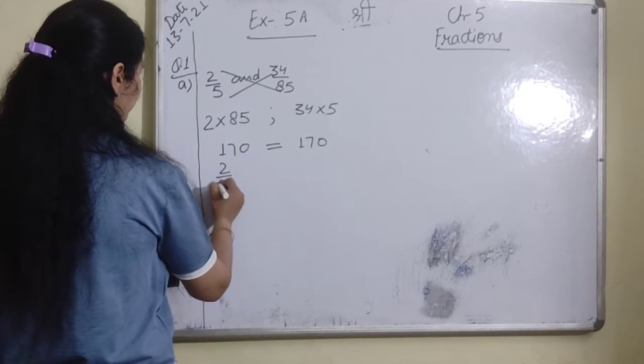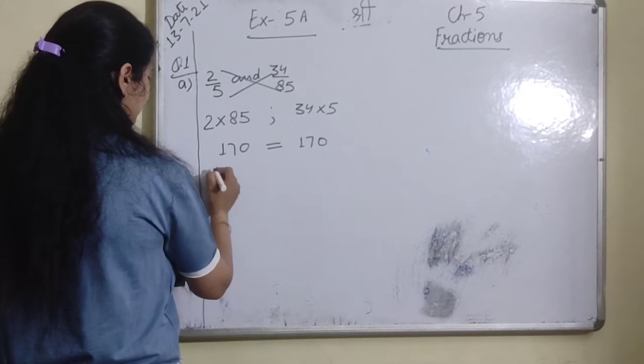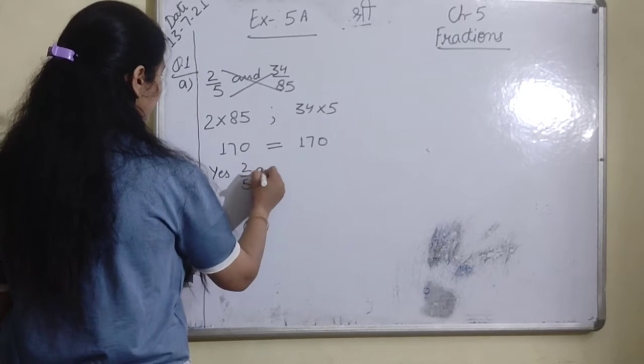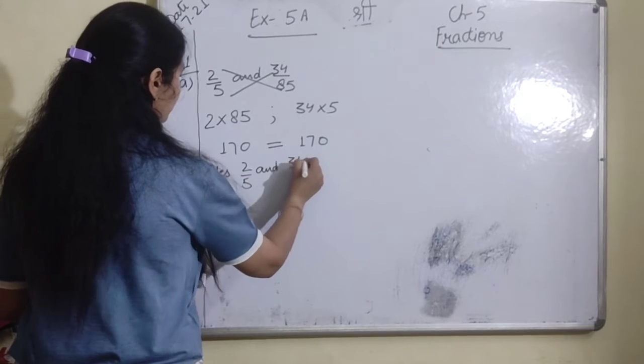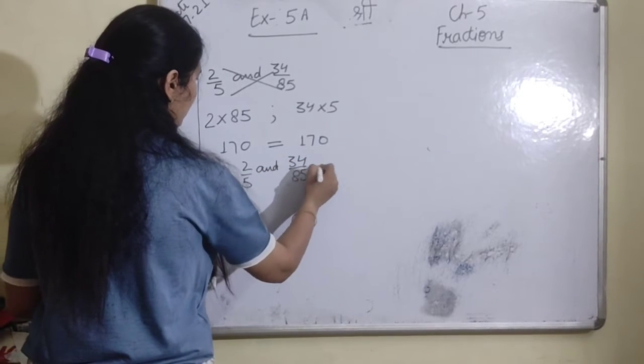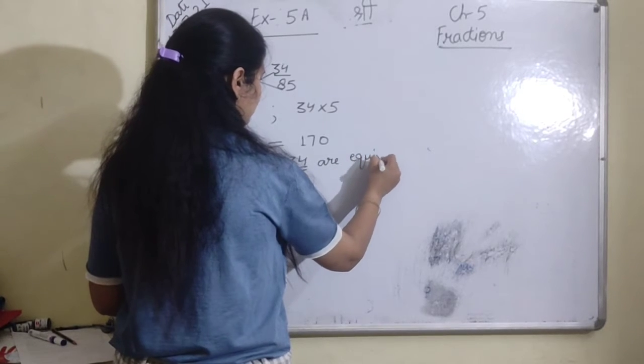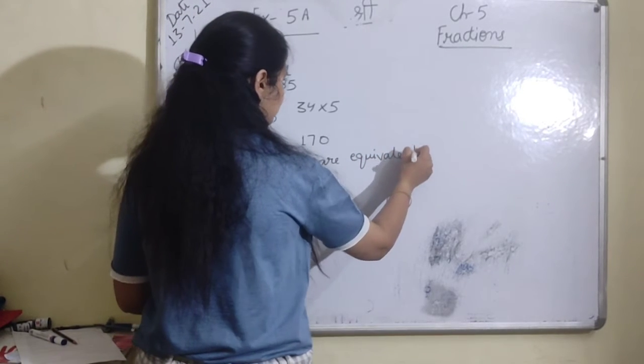So 2 upon 5 and 34 upon 85 are equivalent fractions.